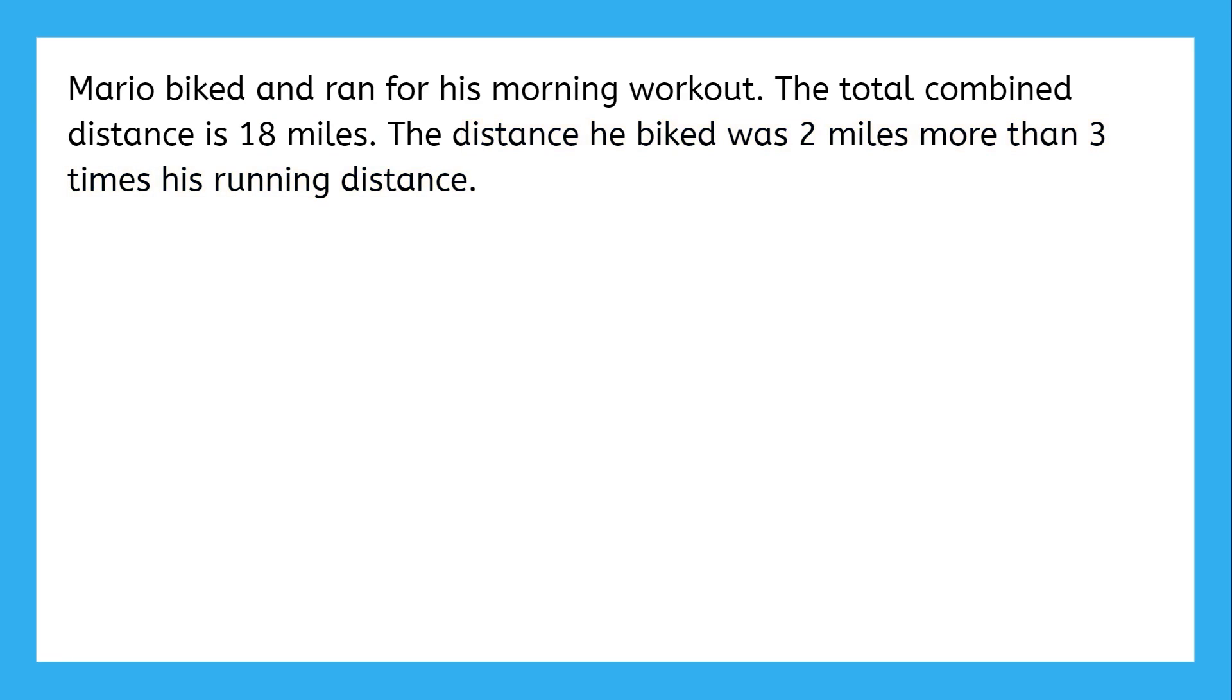So what don't we know? Well, obviously we don't know how far each distance was yet. He might have biked 9 miles and ran 9 miles. Or maybe he biked 6 miles and ran 12. Or maybe he biked 17 miles and only ran 1 mile. So since we don't know the exact distances yet, we'll use variables in their places.